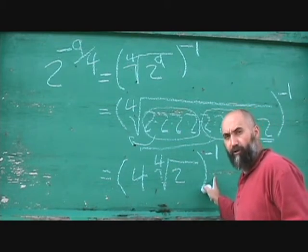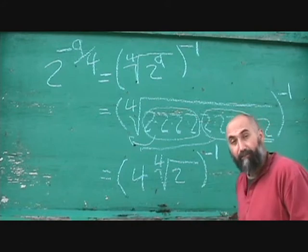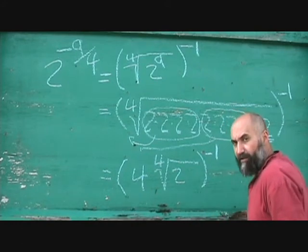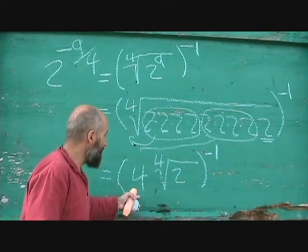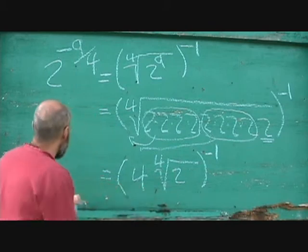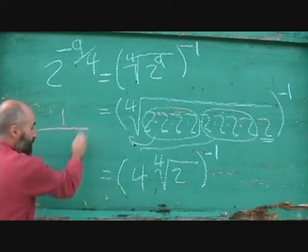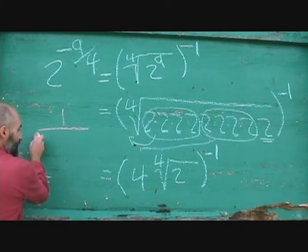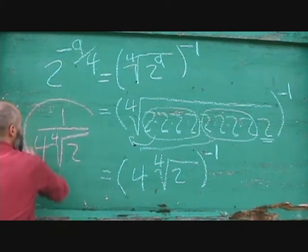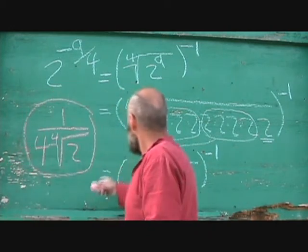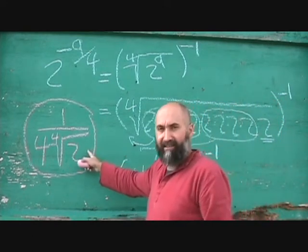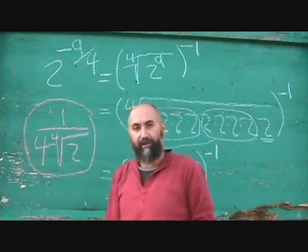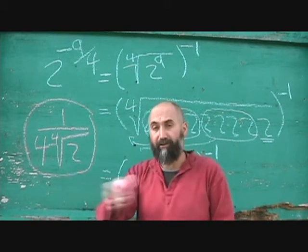This might be sufficient, or if they want positive powers only, you keep the whole thing in the denominator. So the final answer in that form would be 1 over 4 times the 4th root of 2. The negative 1 kicks it down to the denominator, so those two expressions are identical.